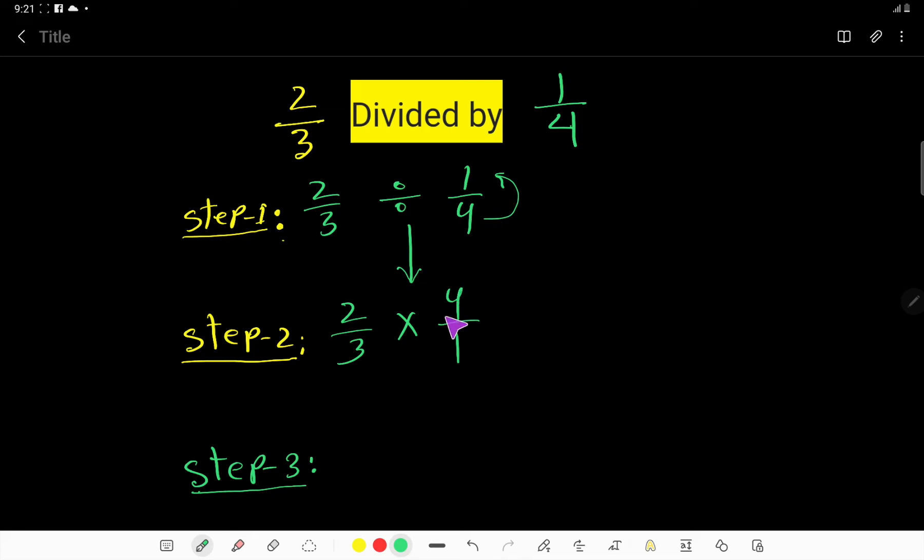Now you have to multiply top to top and bottom to bottom. You are getting 2 times 4 equals 8 divided by 3. Look here, 8 is greater than 3.